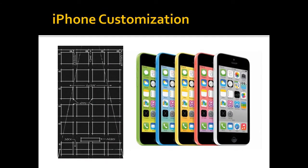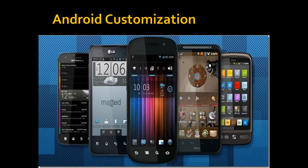One interesting aspect of the iPhone is customization. The iPhone does not really allow you to customize the operating system to your liking — it keeps a grid-like structure of the icons. The iPhone 5c began to give you color choices for the iPhone.